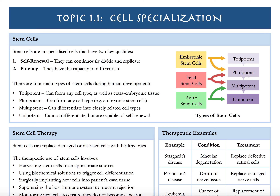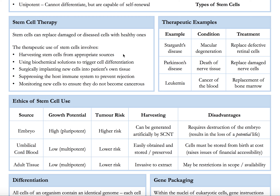Of course, this cannot keep on reproducing or repairing us forever — this is why we age. For stem cell therapy, stem cells can be used to replace damaged cells. We have to get stem cells from appropriate sources, maybe from the bone marrow, give them the correct chemical signal to allow them to differentiate, implant them into the patient's body, suppress the immune system so white blood cells don't kill off the stem cells, and ensure that they don't become cancer, since cancer is basically cells that cannot stop dividing.